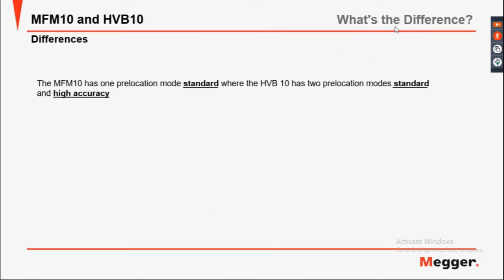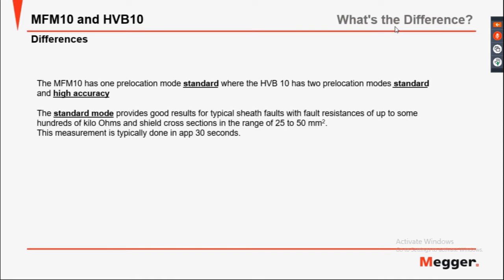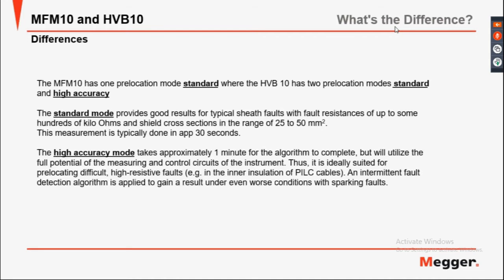The MFM10 has one pre-location mode, which is standard, while the HVB has two pre-location modes: standard and high accuracy. The standard mode provides two grid results — typical sheath pulse and pulse resistance up to some hundreds of kilohms, and the shield cross-section in a range from 25 to 50 mm squared. This measurement is typically done in approximately 30 seconds. The high accuracy mode takes approximately one minute for the algorithm to complete, but utilises the full potential of the measurement, ideally suited for pre-locating difficult, high-resistant faults — for example, in inner installation of field cables.